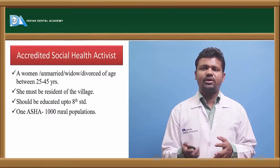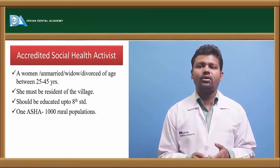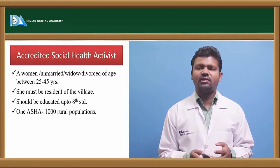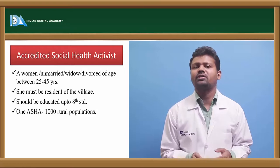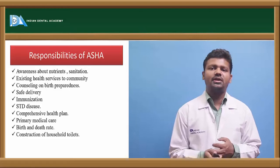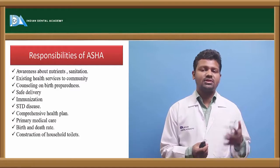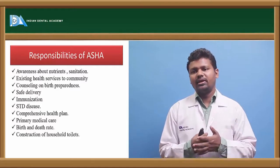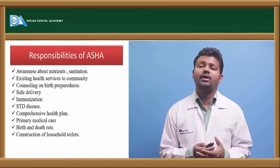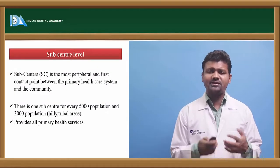ASHA — Accredited Social Health Activist — can be unmarried, widowed, or divorced, aged 25 to 45 years. She must be a resident of the village, educated, and one ASHA covers a thousand rural population. Her responsibilities include awareness about nutrition, sanitation, counseling on preparedness for safe delivery procedures, immunization, primary medical care, and recording births and deaths in the area where she works, as well as construction of household toilets.